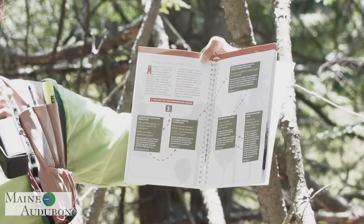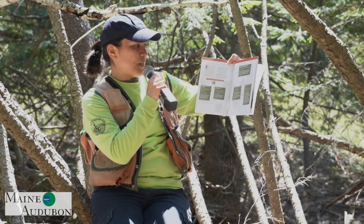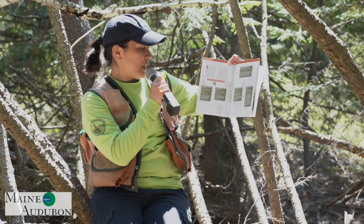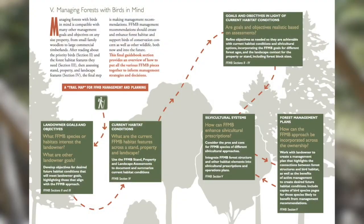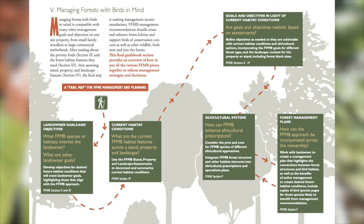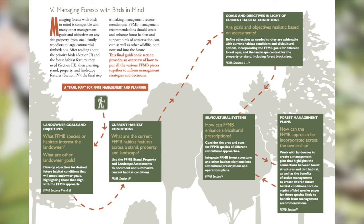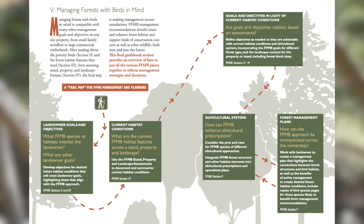So how do you get from a handy habitat assessment to a forest management plan? First we want to know, as a landowner, what are your goals and objectives — that's where it starts. Next we assess the current habitat conditions, and your handy habitat assessment is a good place to start. Then we think about your goals in light of what you actually have going on in the woods, and then we talk about silvicultural systems that can help you achieve your goals.